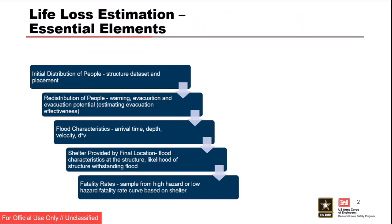Life loss essential elements — we've got five, give or take. So we start out — you had the structure inventories presentation earlier. Nick told you all different ways that you can create that initial distribution of structures and people in your study area. Then through warning and evacuation and our understanding of those parameters that make up our timeline — that helps us define evacuation effectiveness — we redistribute that population at risk.